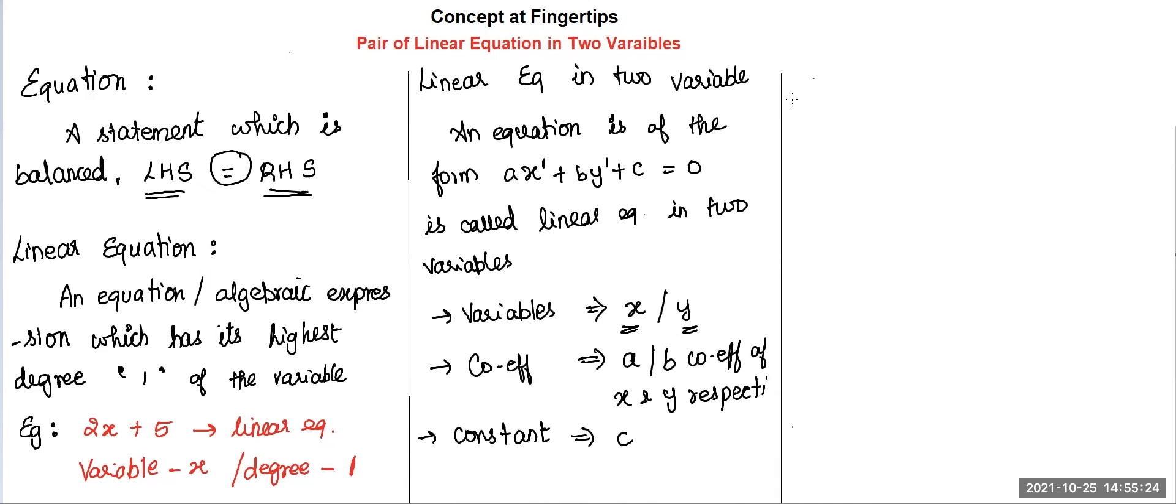How can we represent linear equation in the graph? If we represent linear equation in the graph, how will it look like? A linear equation in two variables always represents a straight line. Therefore, the graph of linear equation will always be a straight line.